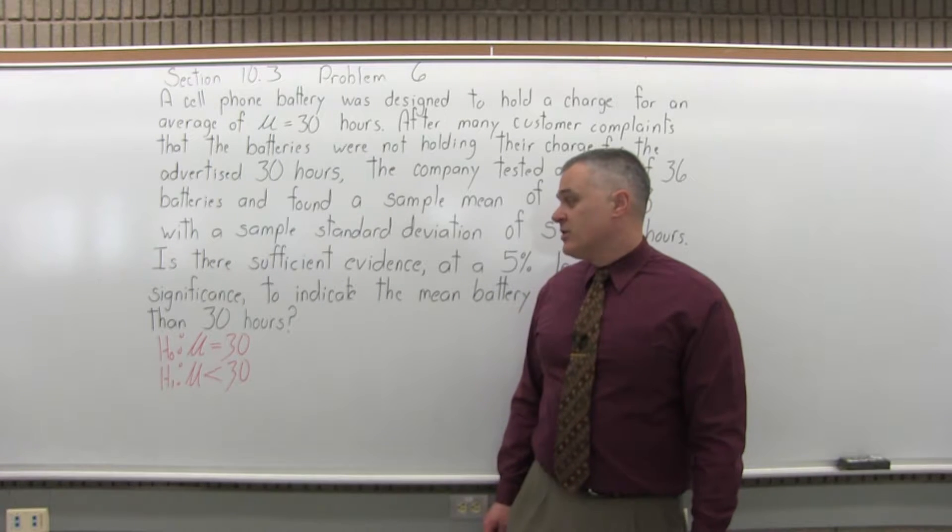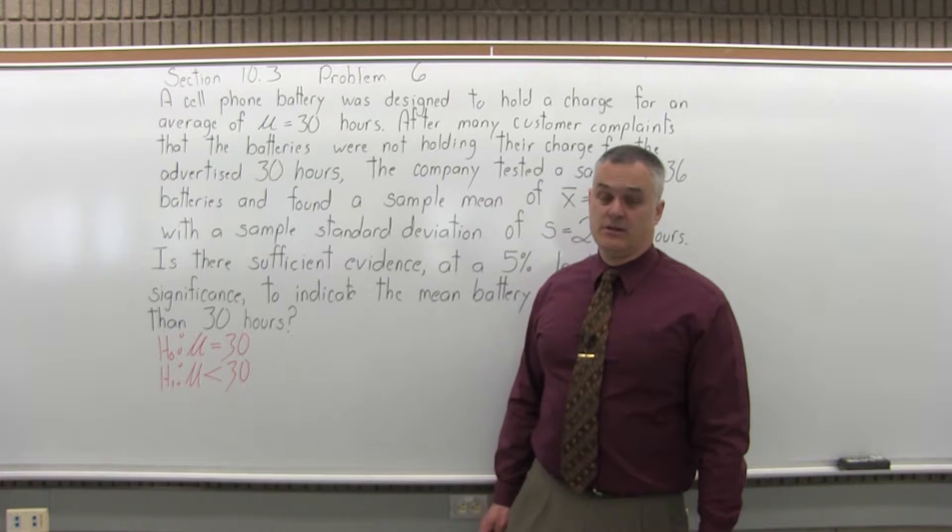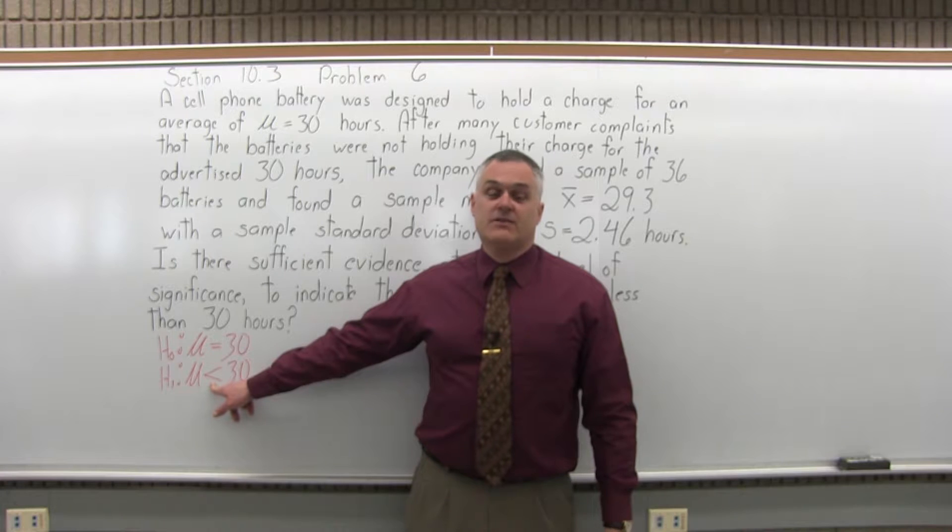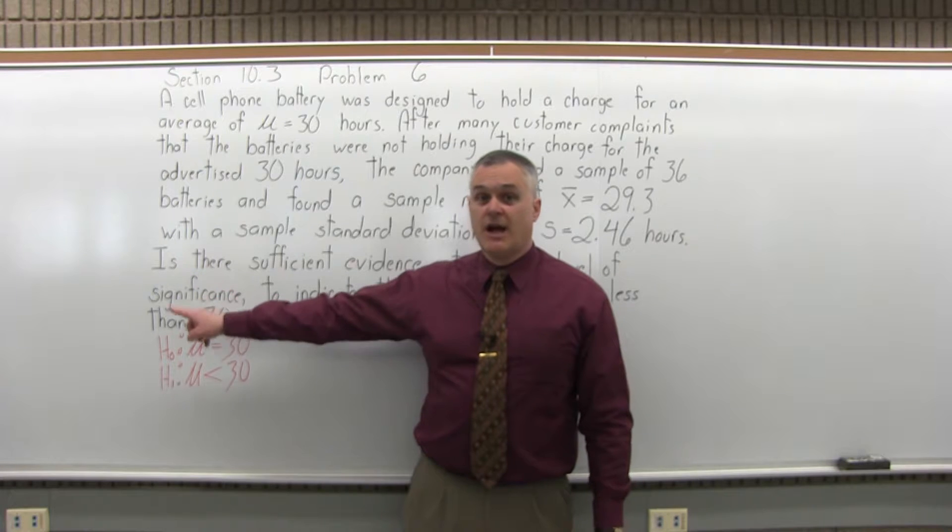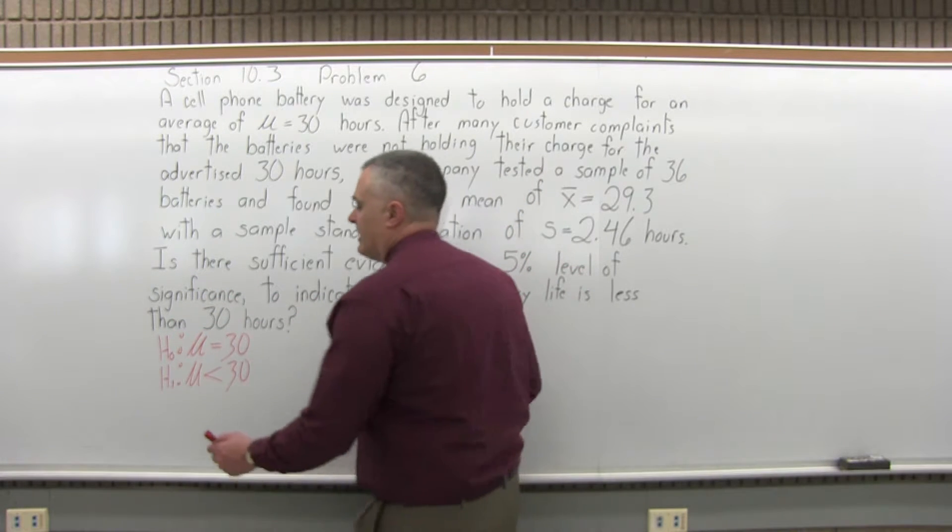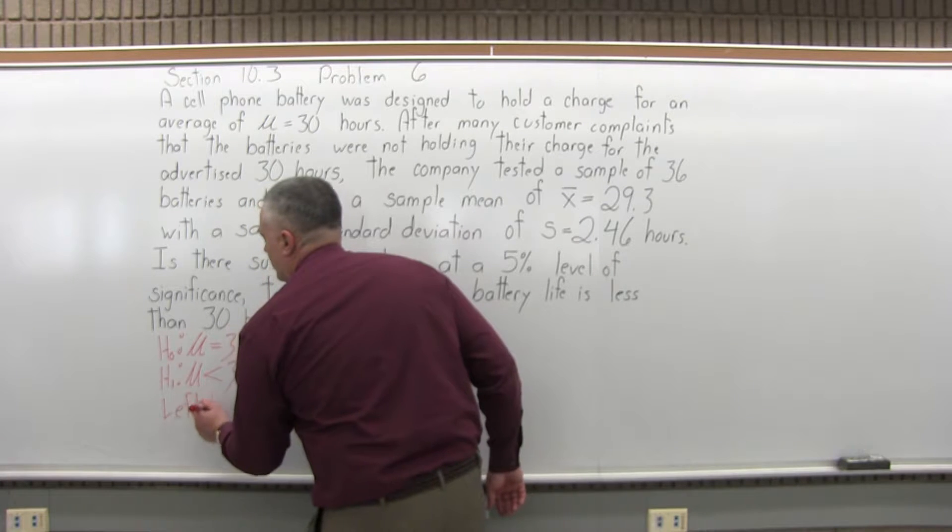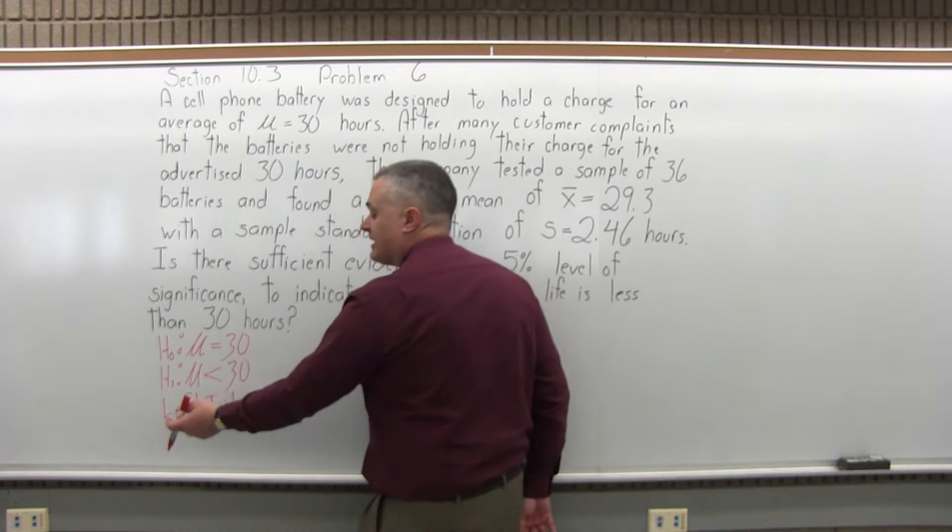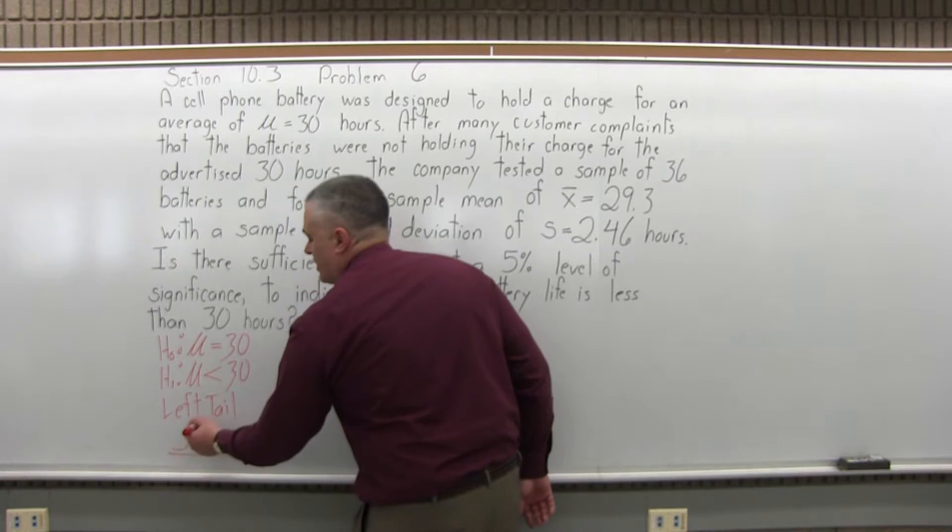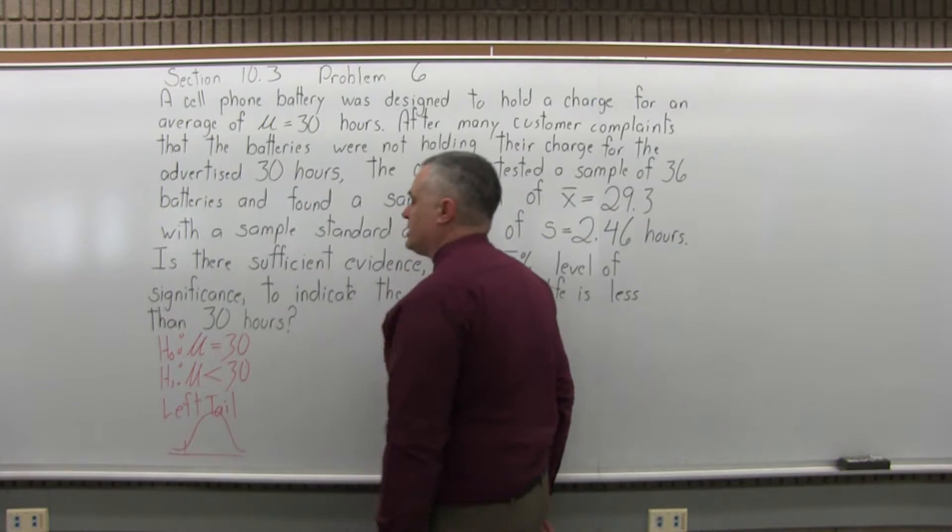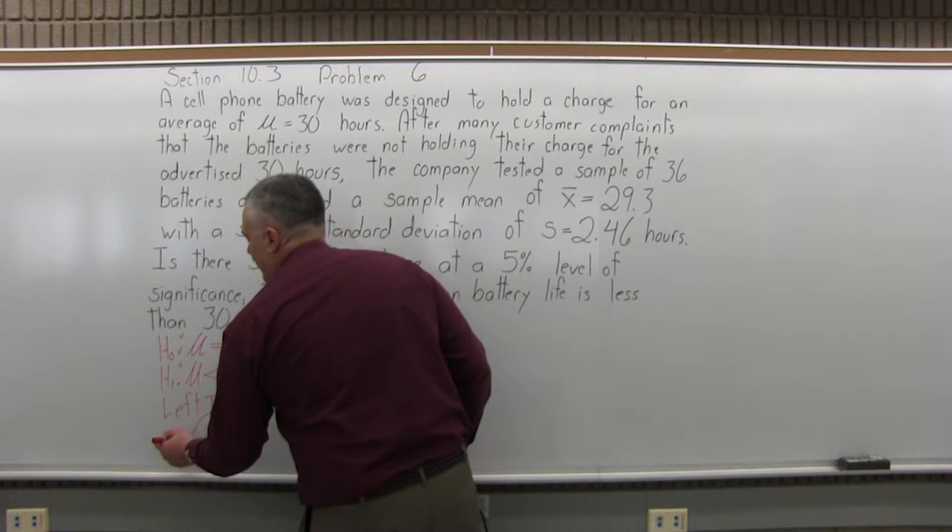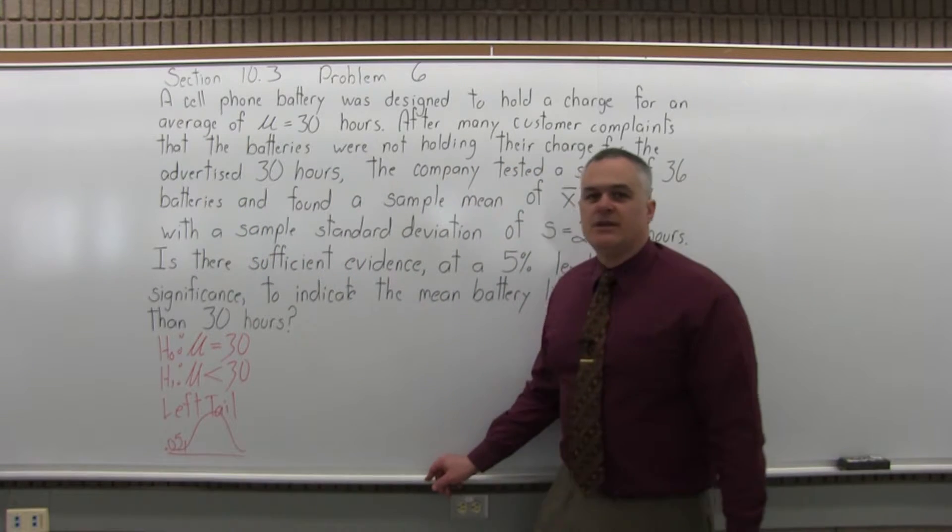The third step is determine if this test is left tail, right tail, or two tail. So to determine that, you want to look at the symbol in the alternate hypothesis. And if there's an inequality symbol, you want to see which direction it's pointing in. So we do have a less than symbol, which points to the left. So this is a left tail test. If it had a greater than, it would be right tail. If it had a not equal to, it would be a two tail. But in this case, it's a symbol that points to the left. So we have a left tail test, which means that the critical region of our graph will be in the leftmost portion. And where we're testing at a 5% level of significance, you want to see if we get into the leftmost 5% of that graph. That's our critical region.